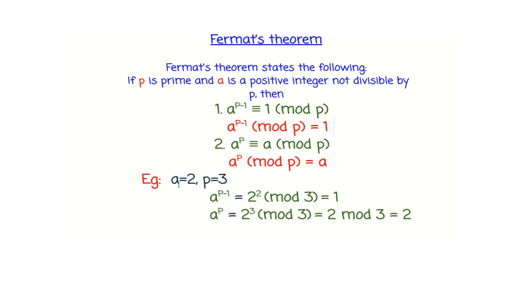For example, A is equal to 2 and P is equal to 3. P is prime and A is a positive integer not divisible by P. So A raised to P minus 1: 2 raised to 3 minus 1 is 2 raised to 2, which equals 4. And 4 mod 3 is equal to 1. That is clear.